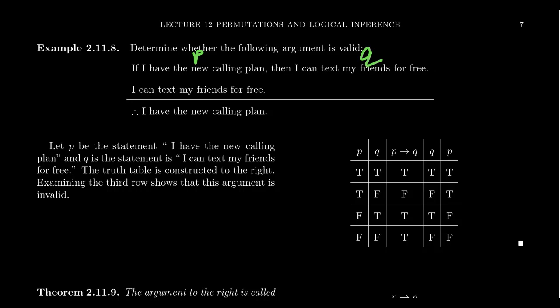The first statement is 'if P then Q,' which we write in conditional form. The second statement is just Q — I can text my friends for free. And the conclusion is P — I have the new calling plan. So the argument being made is: P implies Q, Q, therefore P. Is this a valid argument? Does the truth value of the premises guarantee the truth of the conclusion? We can prove an argument valid or invalid from a truth table, where we consider all possibilities of the truth values of the primitives P and Q.